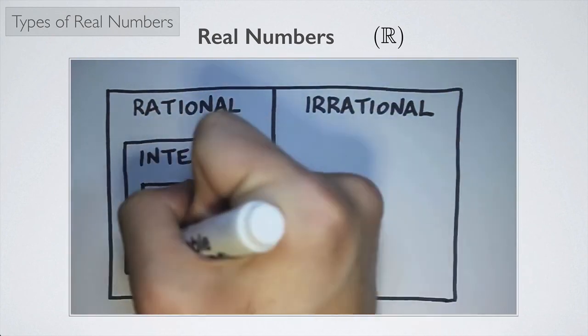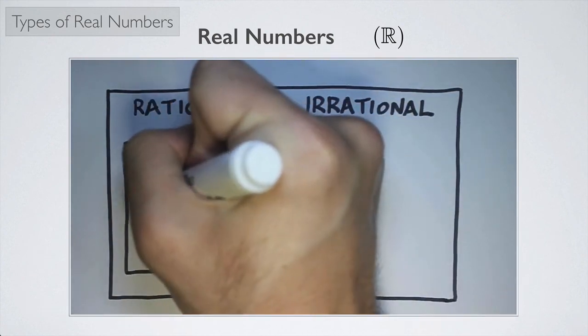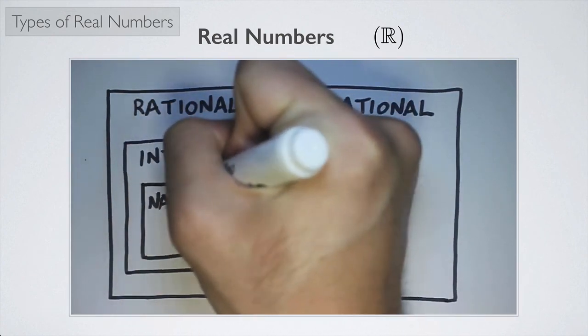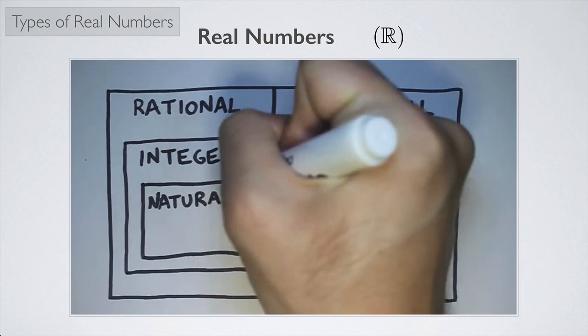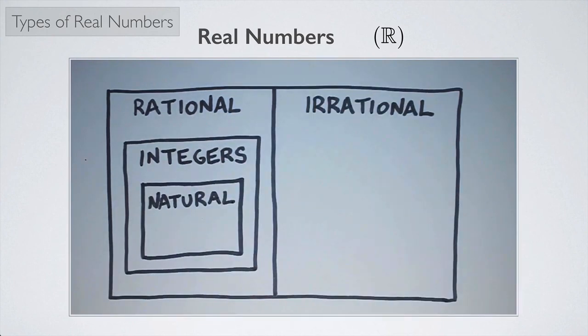And then furthermore, we can go ahead and say the natural numbers are a subset of the integers. And this is how everything fits together to make up the set of real numbers.